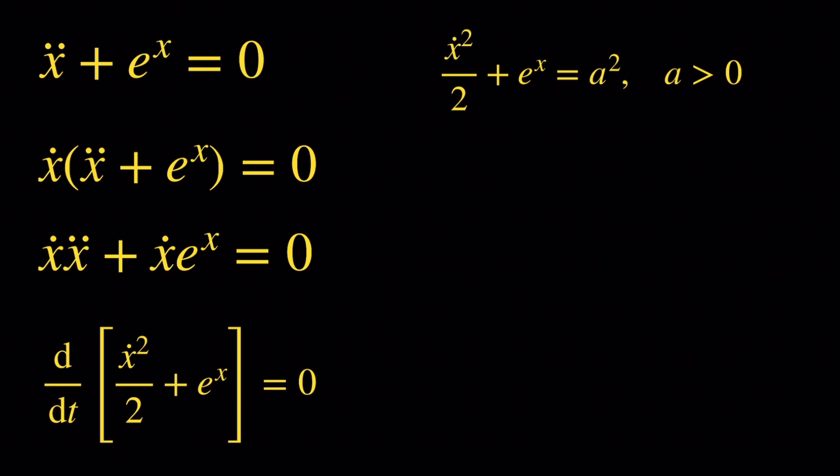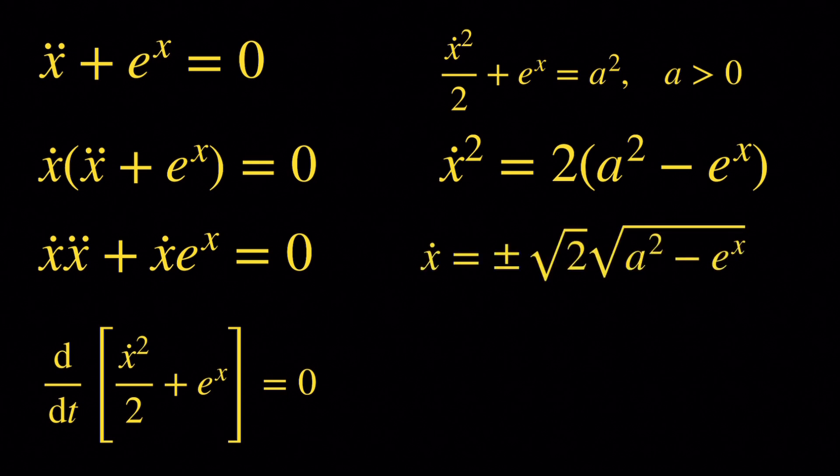Now we can solve this equation. We can look at it as an algebraic equation, which we solve with respect to x-dot. We get x-dot squared equals 2 times a squared minus e to the x. Taking the square root on both sides, we get x-dot equals plus or minus root 2 times the square root of a squared minus e to the x.